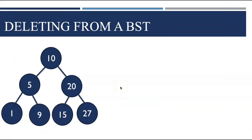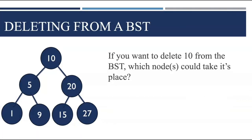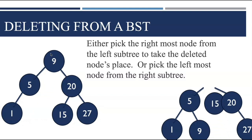What about deleting from a binary search tree? If the node you want to delete is a leaf node — like 19, 15, or 27 — you can just remove it and everything's fine. It gets more complicated if the value you want to remove is not a leaf node. If you want to delete the root, you can either move as far as possible on the left subtree and pick the rightmost node, like 9, or go on the right subtree and pick the leftmost node, like 15. Either the 9 or the 15 would do a good job taking the place of the 10 we're deleting.